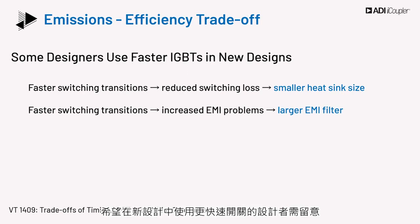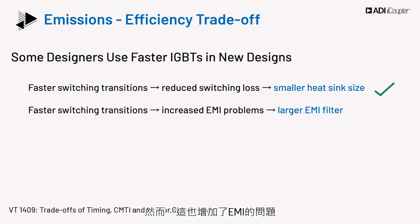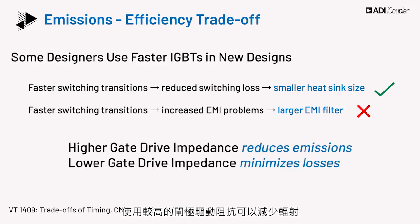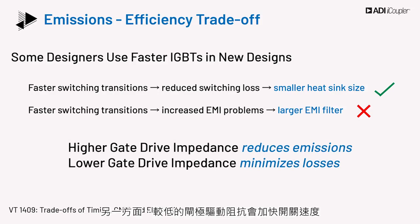Some designers looking to use faster switches in new designs need to consider that faster switching transitions will lead to reduced switching loss, and thus a smaller heat sink is required. However, this also leads to increased EMI problems, and the system will require a larger EMI filter to keep radiated emissions within limits. Thus, the design trade-off. Using higher gate drive impedance reduces emissions while slowing the device operation. On the other hand, lower gate drive impedance results in faster switching, which minimizes losses.